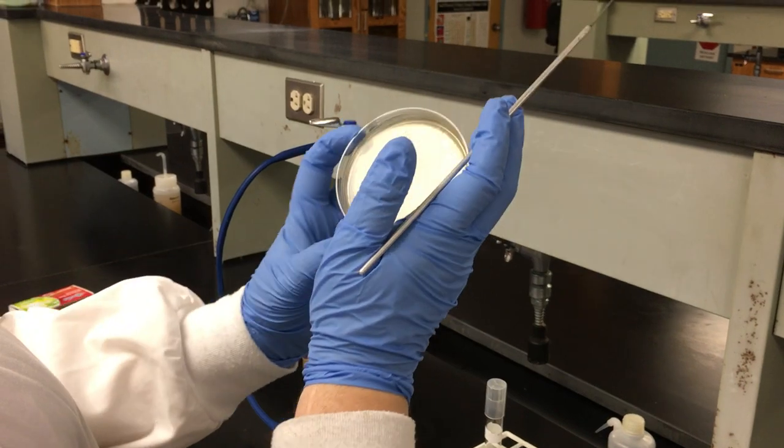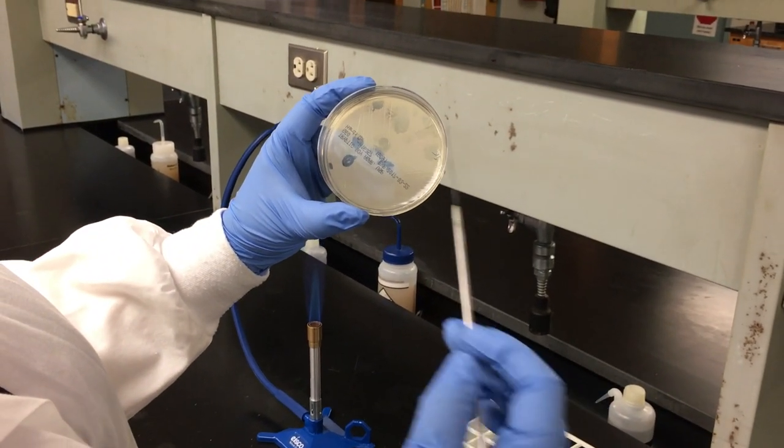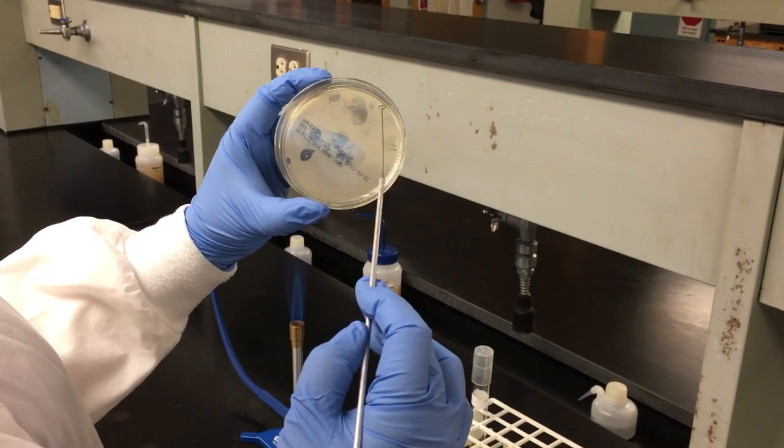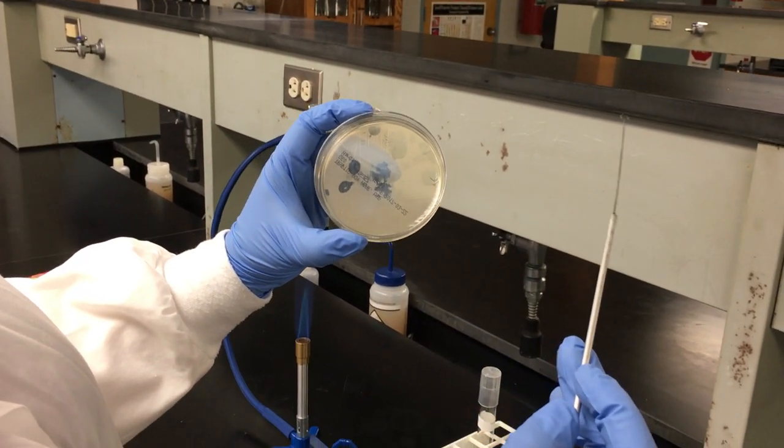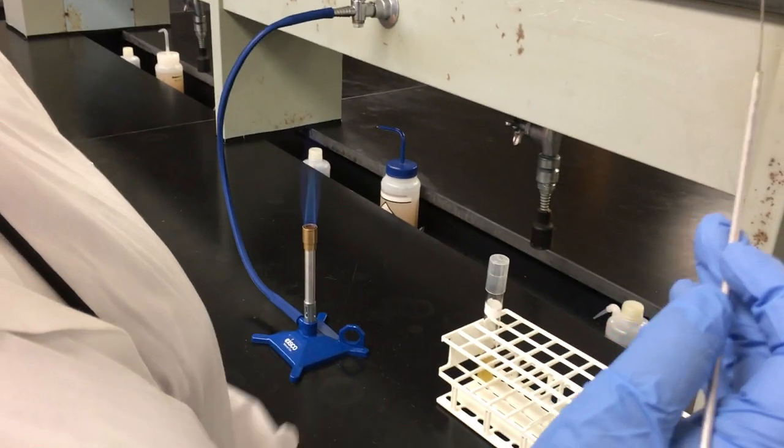Now turn your plate to the section that you just did quadrant two in. You are going to pull out of quadrant two in the last section one time and zigzag down, not going into the first quadrant, stopping before you hit the first quadrant to allow for individual organism isolation.